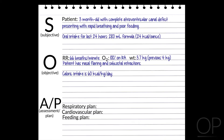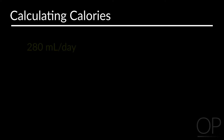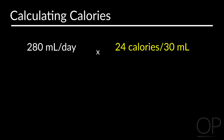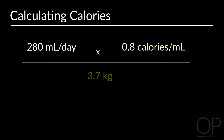Please note, if you do not use ounces at your institution, the equation would instead read 280 milliliters in 24 hours. Since there are 30 milliliters in one ounce, the formula has 24 calories per 30 milliliters, or 0.8 calories per 1 milliliter. Baby weighs 3.7 kilograms.